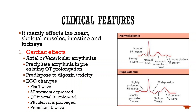Hypokalemia mainly affects the heart, skeletal muscles, intestine, and kidneys. Regarding cardiac effects, hypokalemia is a major risk factor for atrial or ventricular arrhythmias, which can prove fatal. It can precipitate arrhythmia in pre-existing QT prolongation. It also predisposes to digoxin toxicity, as digoxin competes with potassium to act on the sodium-potassium ATPase pump. If there is less potassium, there will be more action of digoxin on the ATPase pump, bringing about digoxin toxicity.